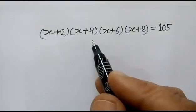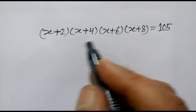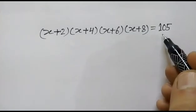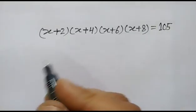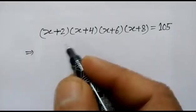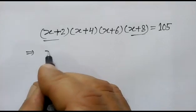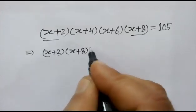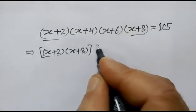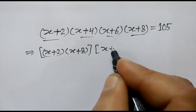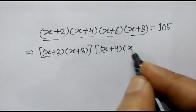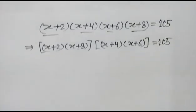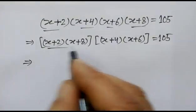Hi friends, we have to solve this nice equation: (x+2)(x+4)(x+6)(x+8) = 105. Let's start — first we rearrange the equation, pairing this with this: (x+2)(x+8) and (x+4)(x+6) is equal to 105.